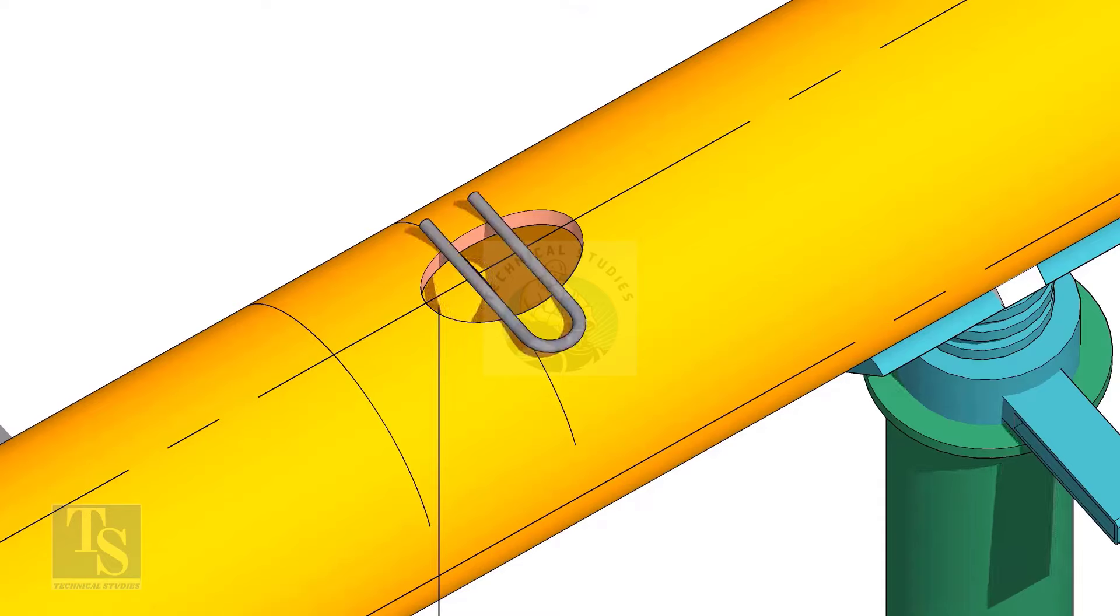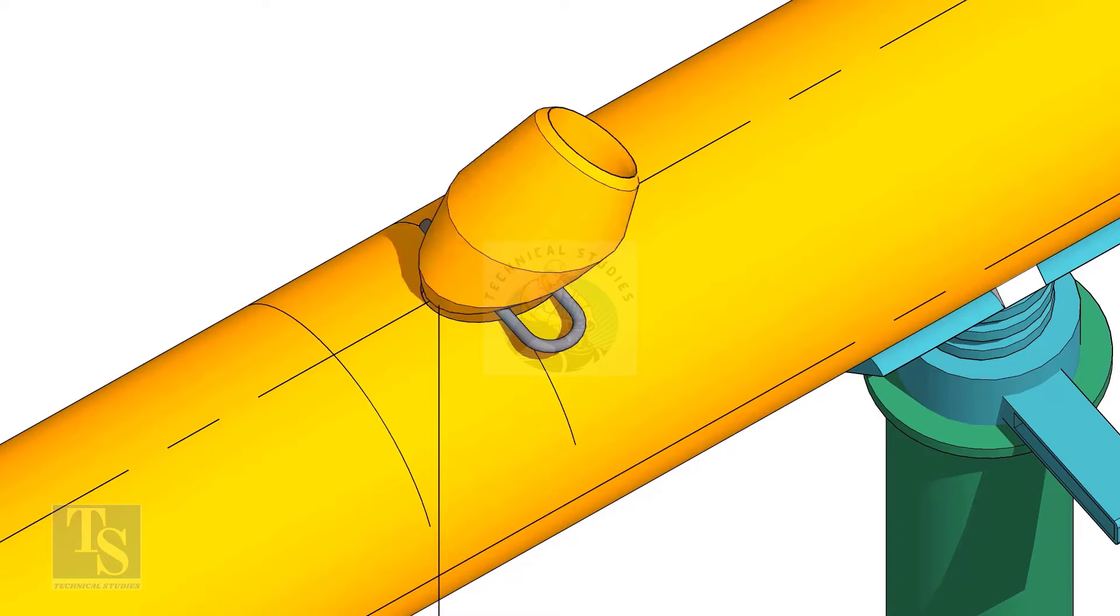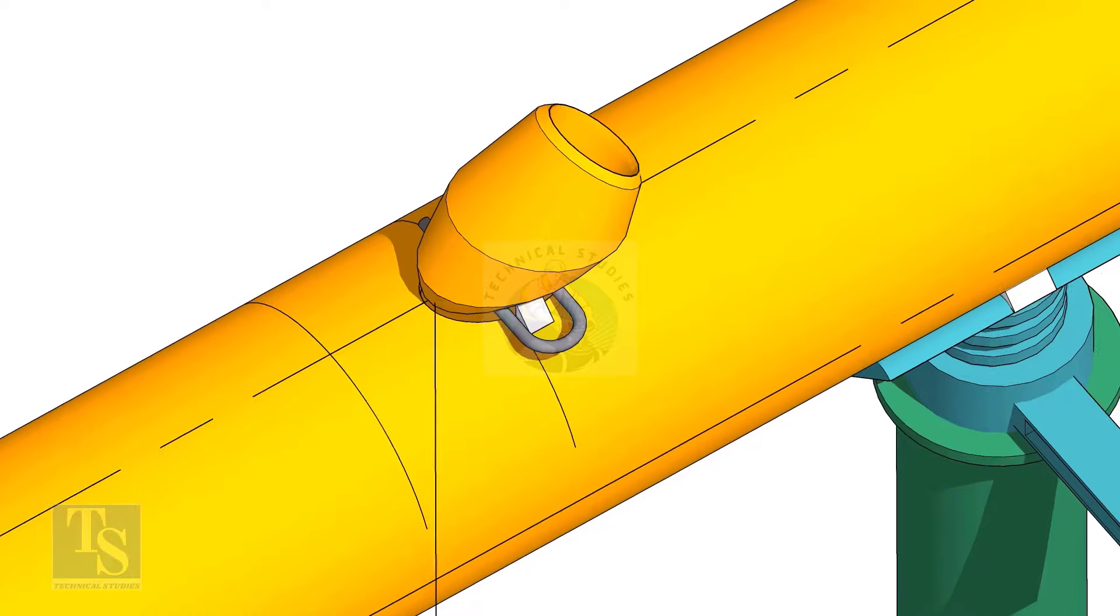Cut and clean the opening on the header. Put the lateralette on the center of the hole. Tack weld on one side.